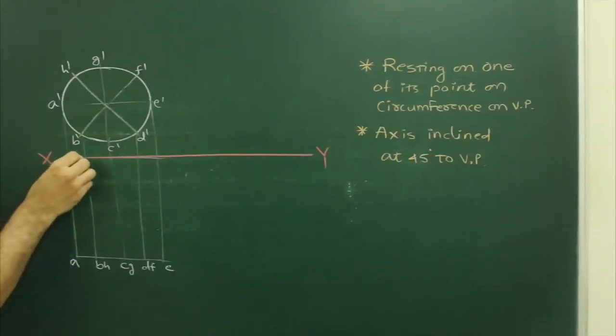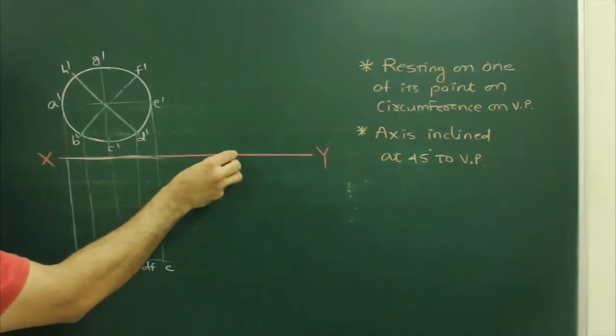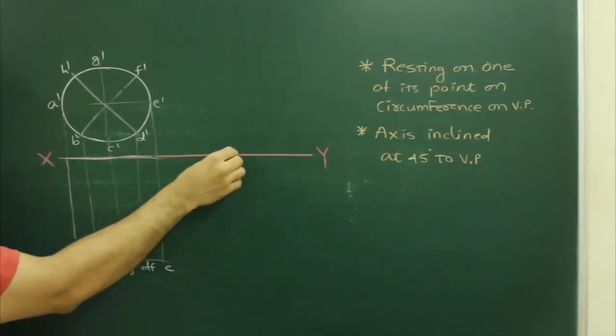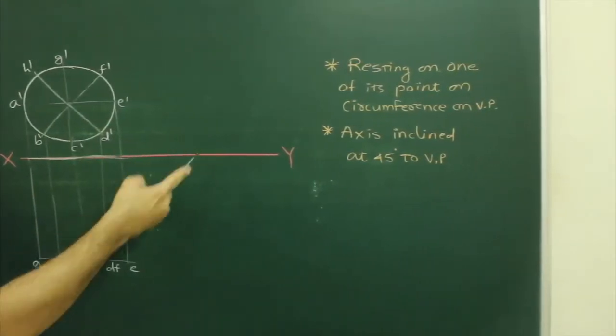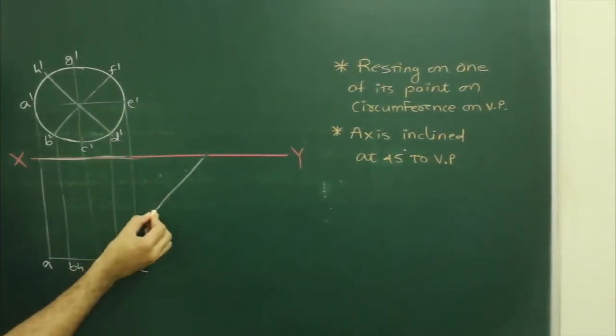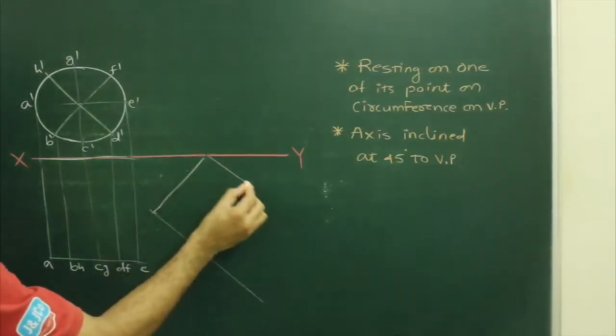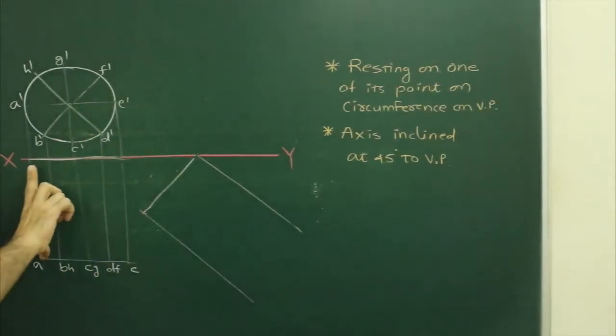Now there will be an axis inclined at 45 degrees. So the base will be inclined at what angle? 45 degrees. So you draw 45 degrees. Take this base, cut it on this. Take this height.